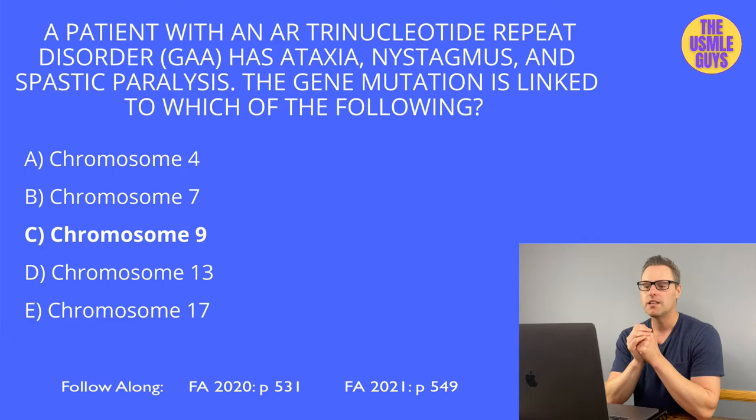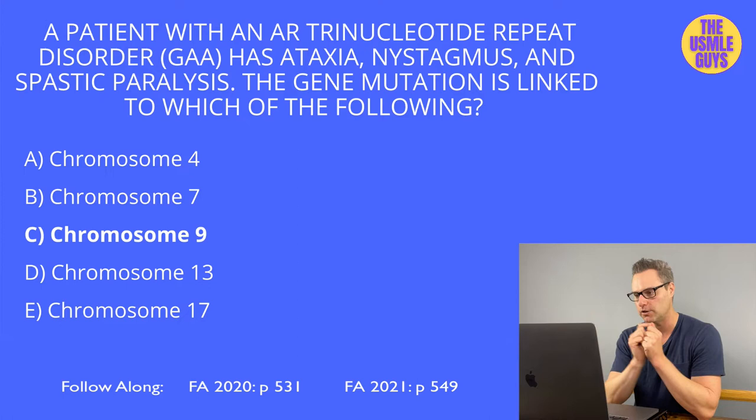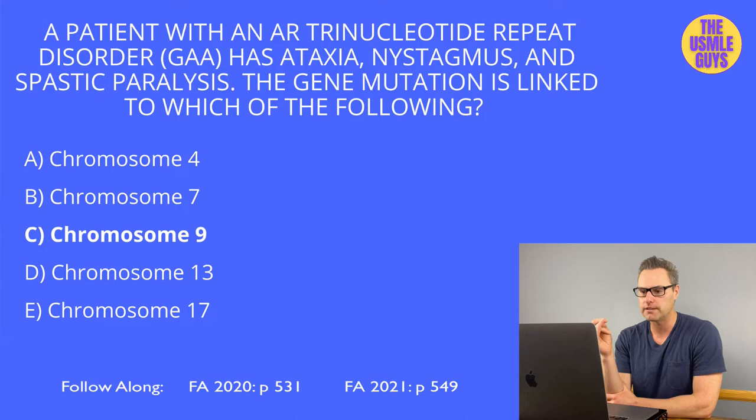The correct answer is C. The condition here is Friedreich's ataxia. This is inherited in an autosomal recessive manner and involves a trinucleotide repeat of the GAA sequence found on chromosome 9. This results in an impaired frataxin protein.